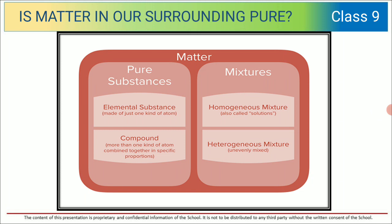And mixtures can be homogeneous and heterogeneous. Homogeneous mixtures are also called solutions. Now, what are compounds? More than one kind of atom combined together in specific proportions is called a compound. In case of heterogeneous mixtures, they are unevenly mixed — that means the particles are not evenly mixed.